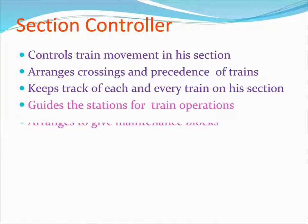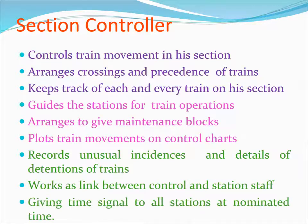The Section Controller controls train movement in each section, arranges crossing and precedence of trains, and keeps track of each and every train on each section. The Section Controller guides stations for train operations, arranges maintenance blocks, plots train movement on control charts, records unusual incidences and details of detentions of trains, works as a link between control and station staff, and gives time signals to all stations at nominated times.